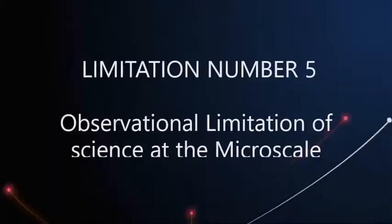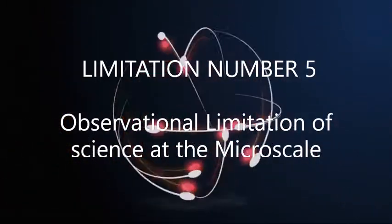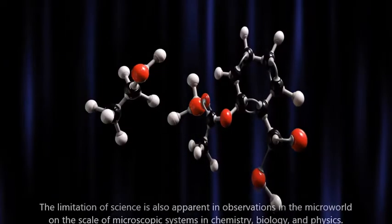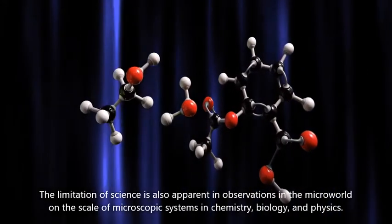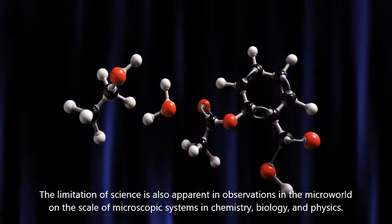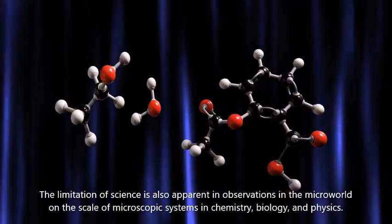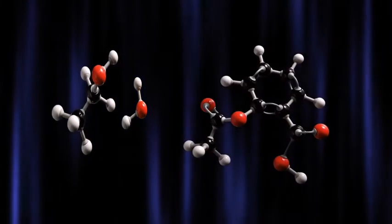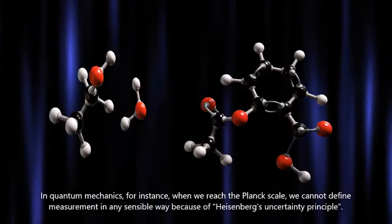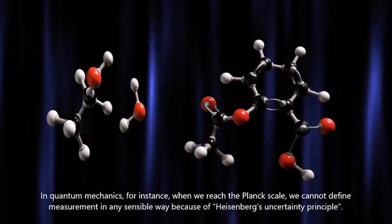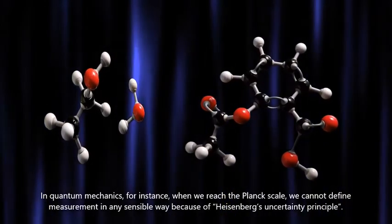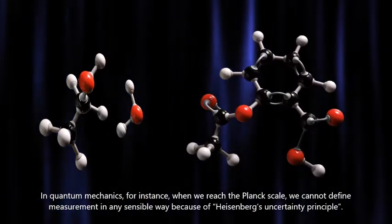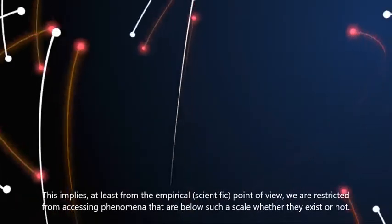Limitation Number 5: Observational Limitation of Science at the Microscale. The limitation of science is also apparent in observations in the microworld on the scale of microscopic systems in chemistry, biology, and physics. In quantum mechanics, for instance, when we reach the Planck scale, we cannot define measurement in any sensible way because of Heisenberg's uncertainty principle.